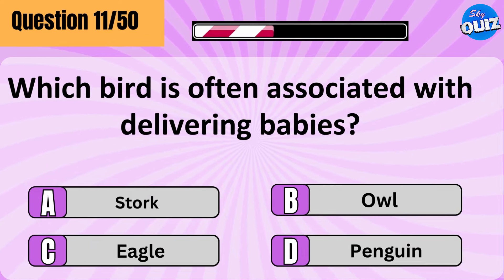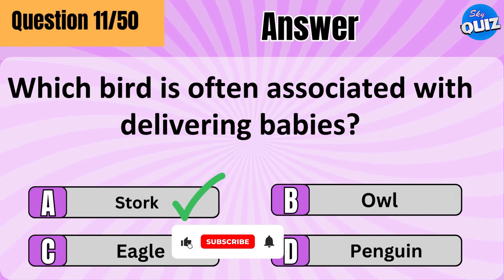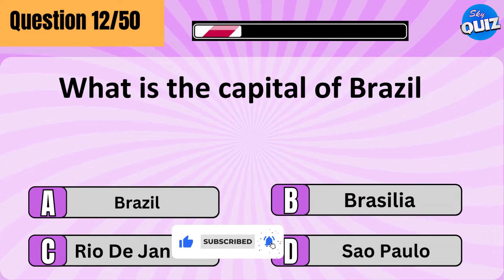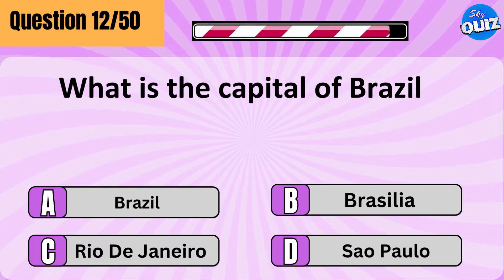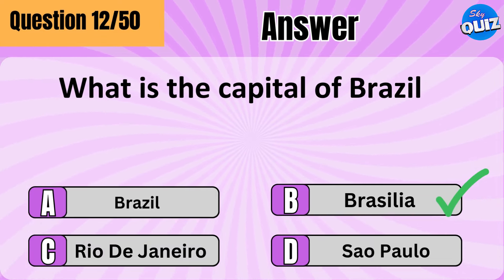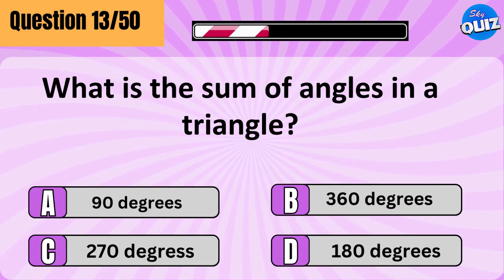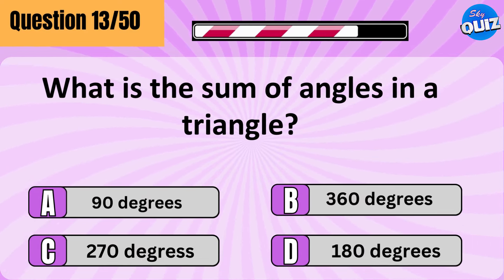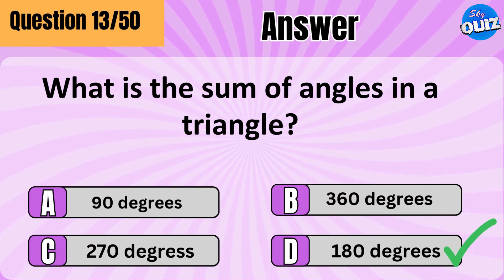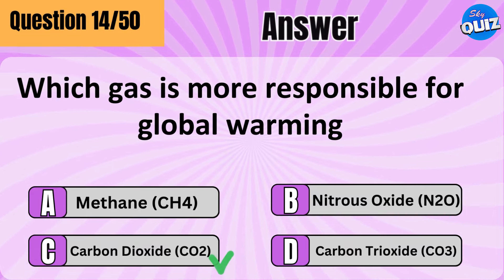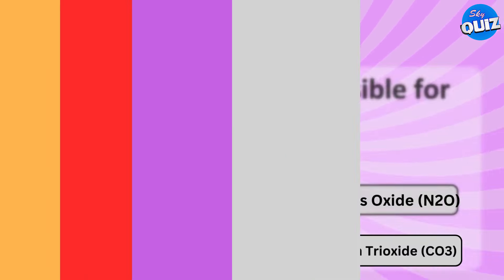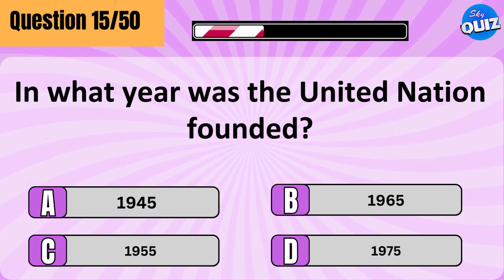Which bird is often associated with delivering babies? A stork. What is the capital of Brazil? What is the sum of angles in a triangle? 180 degrees. Which gas is most responsible for global warming? Carbon dioxide (CO2).